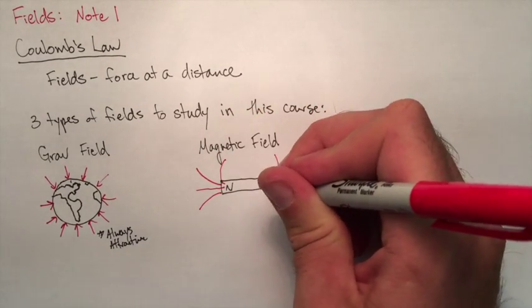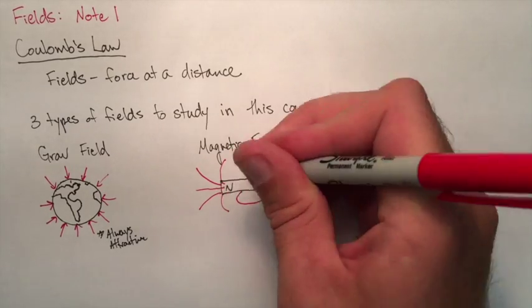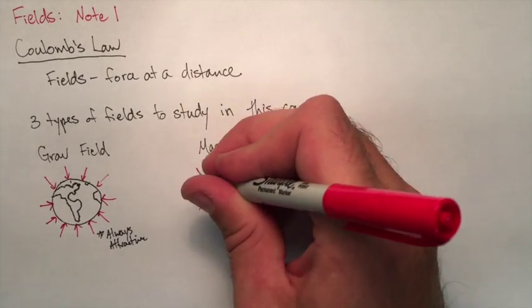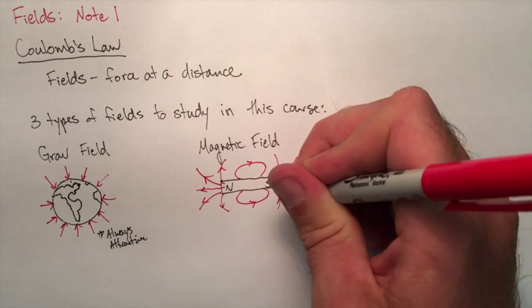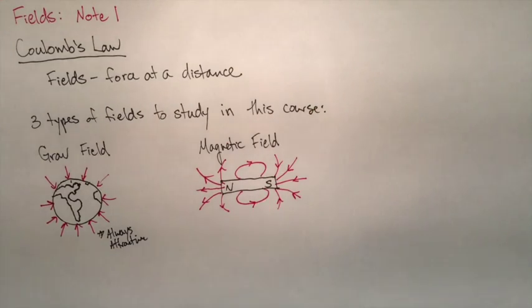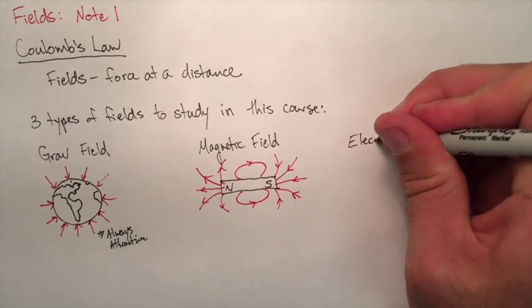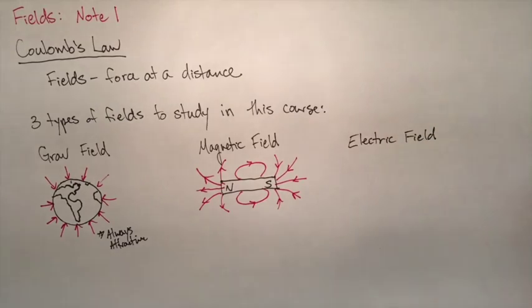We're also going to look at magnetic fields. This is something we sort of saw in Grade 11. Magnetic fields come from something magnetic. In this case, we're drawing a magnet. The field lines are vectors and they always come out of the north and they go into the south.